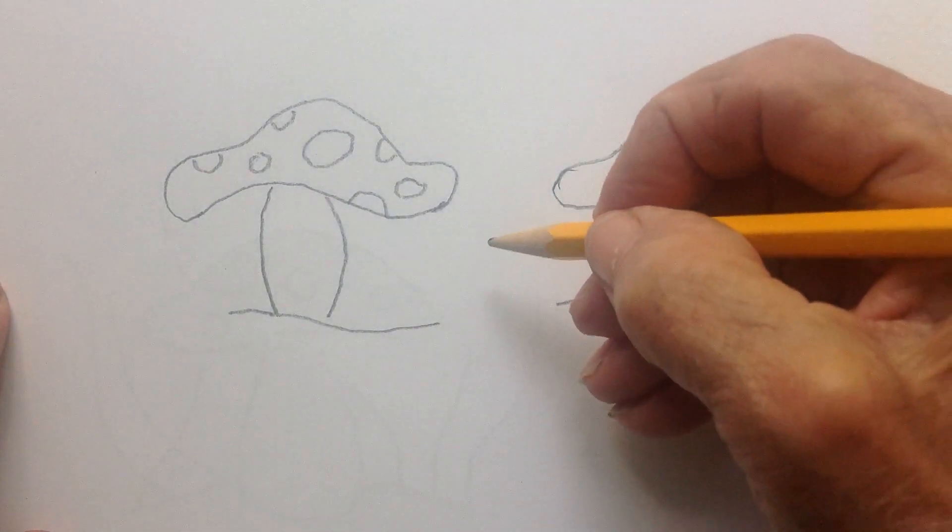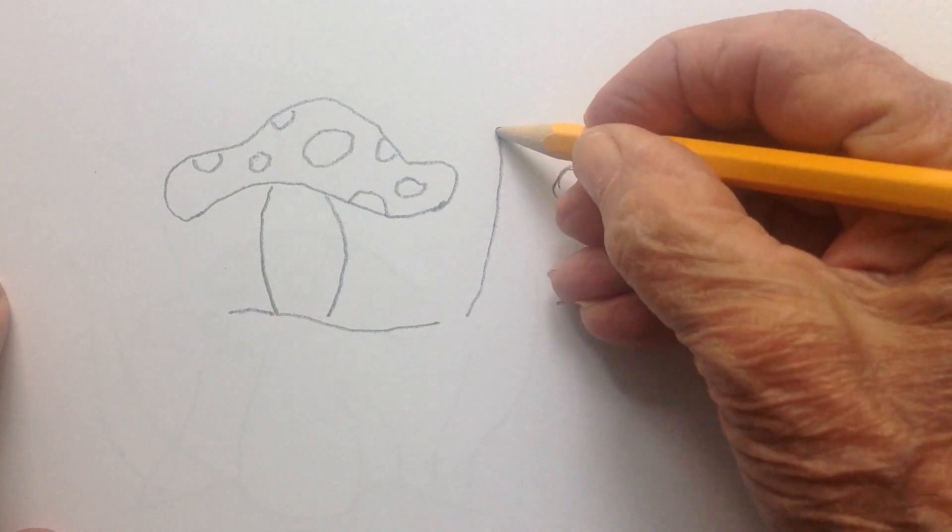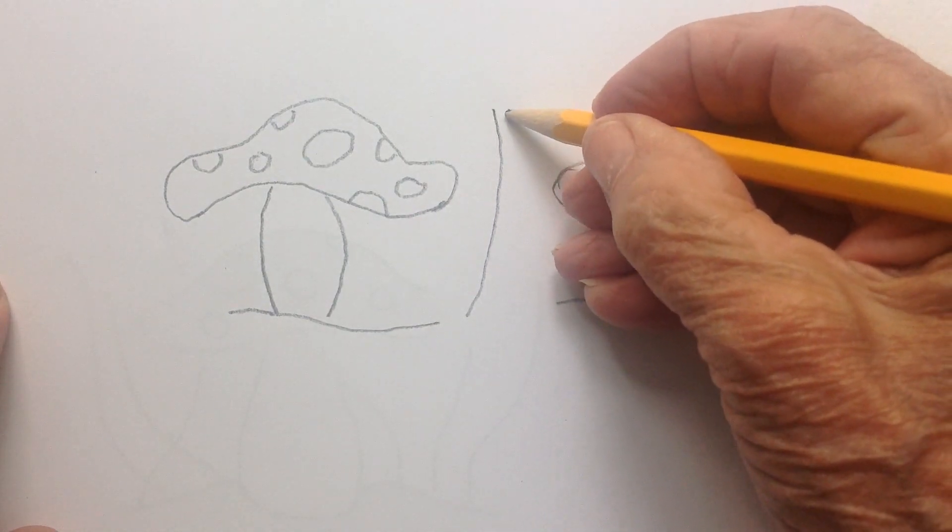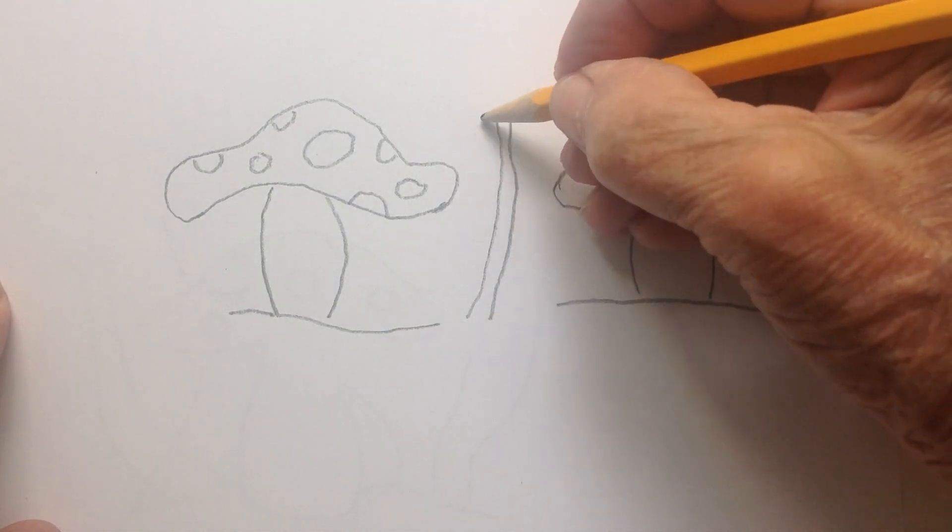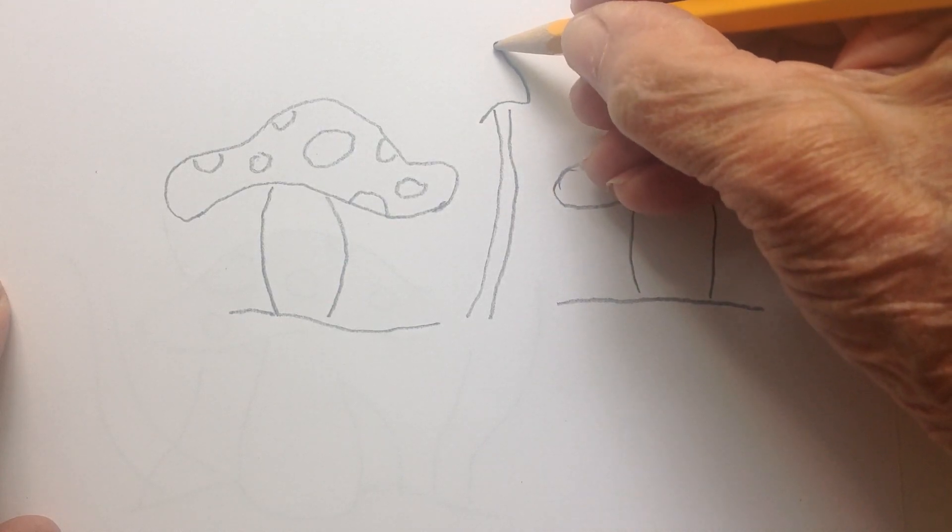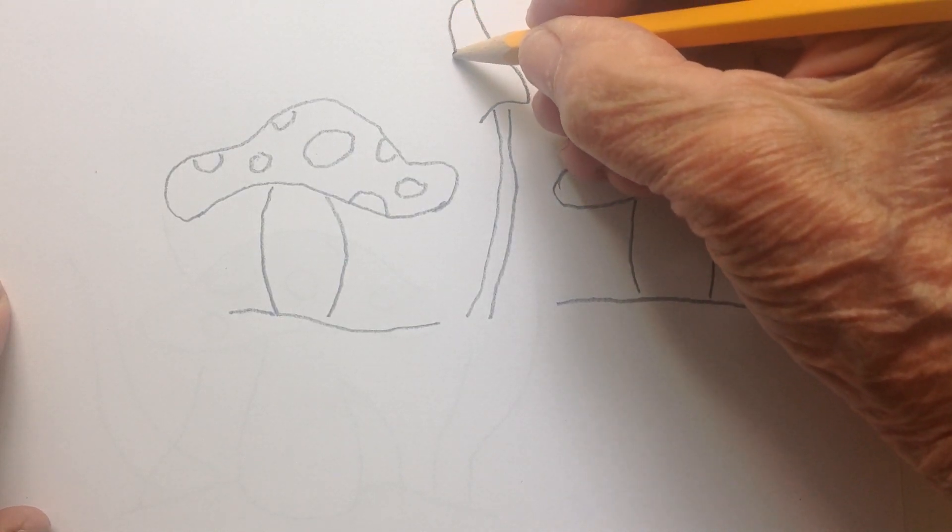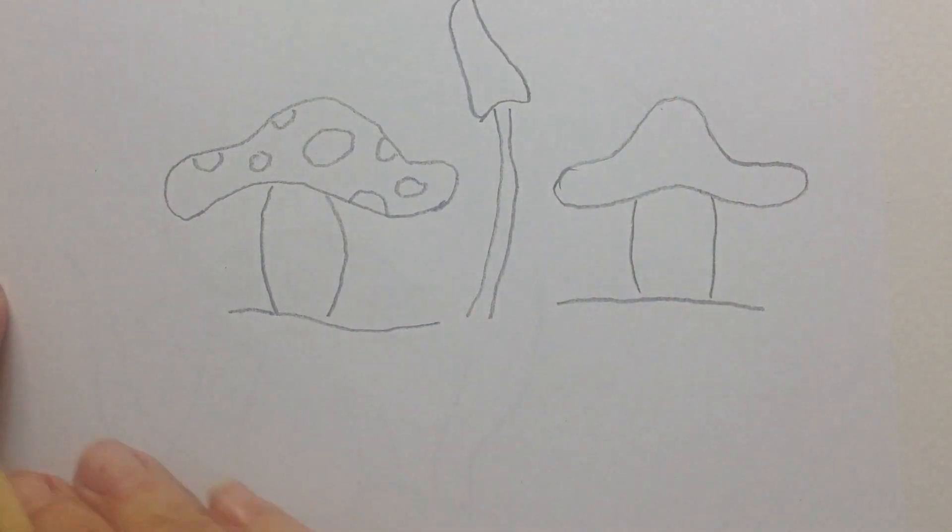Another mushroom might be something like this. A really skinny stem. And you make it a little skinny mushroom. So those are kind of mushroom shapes that you can do.